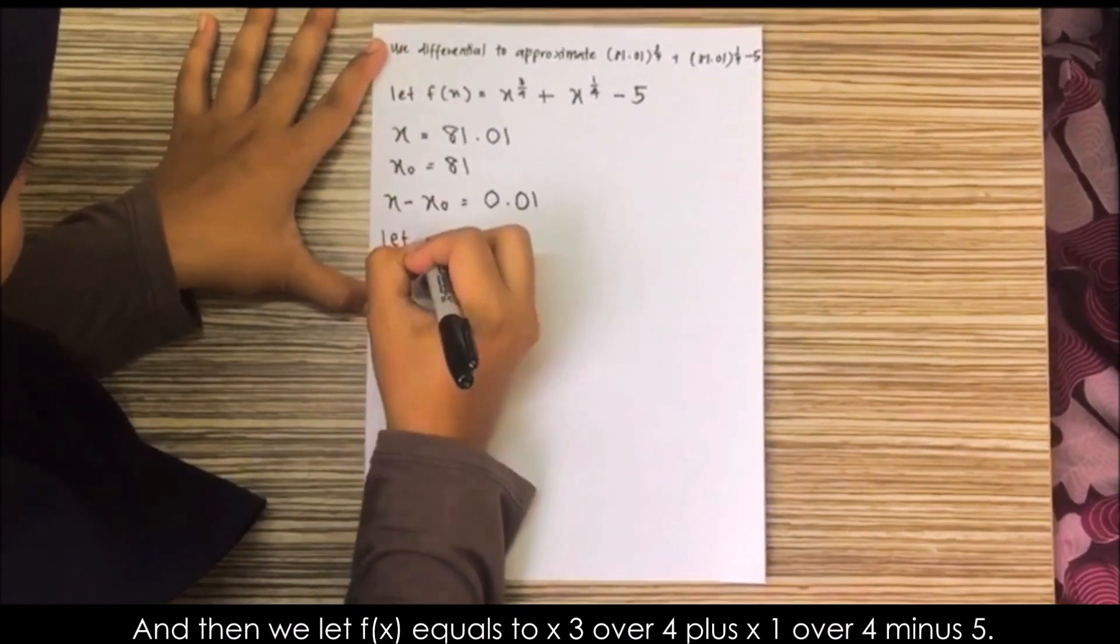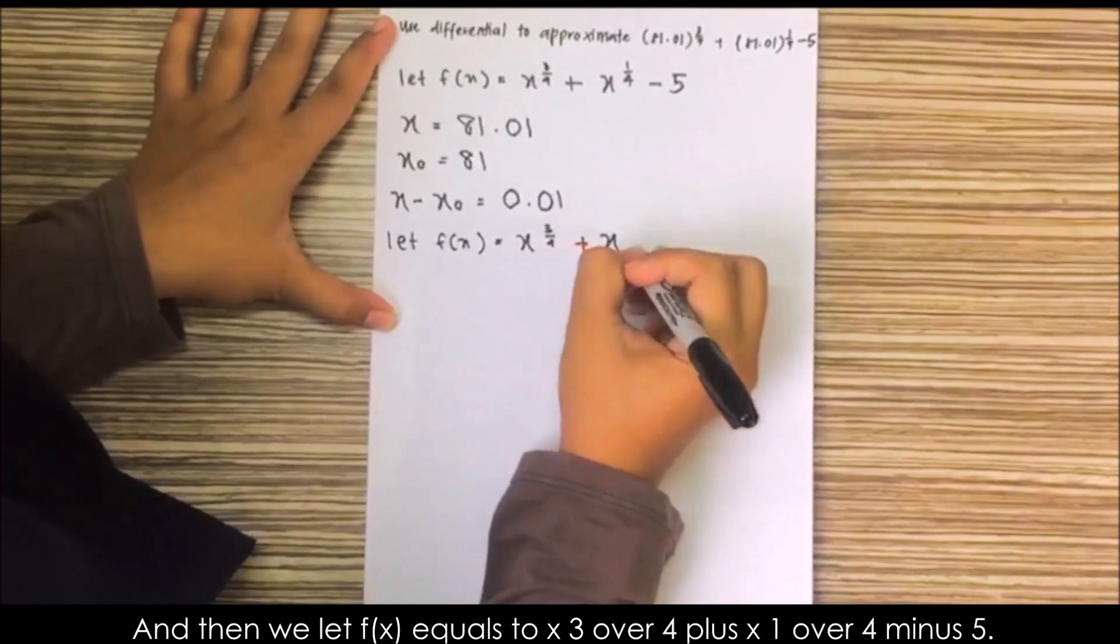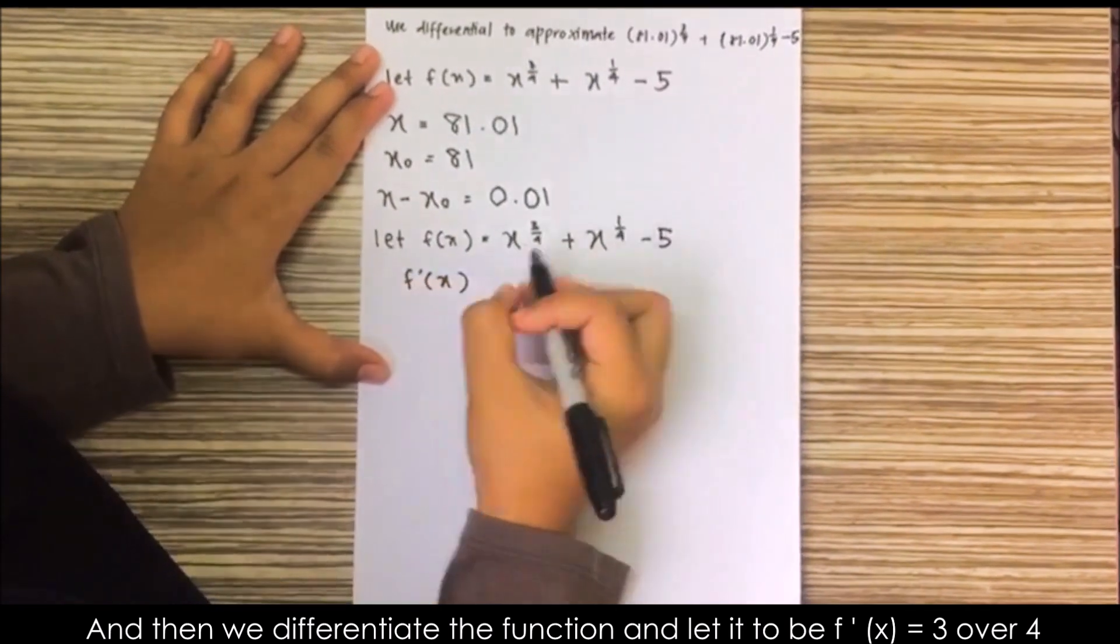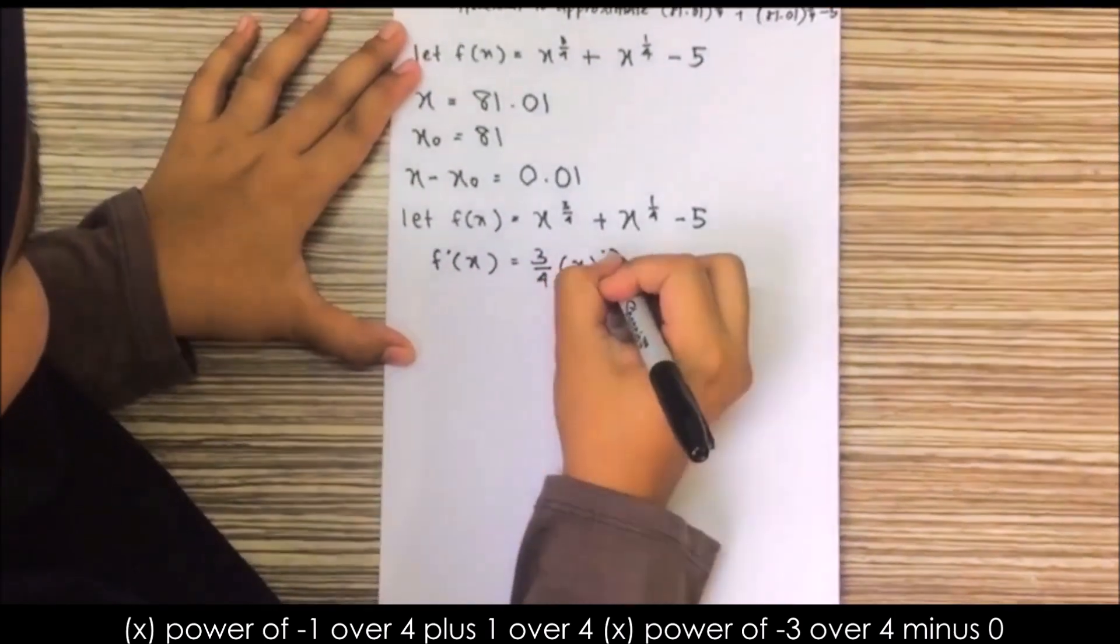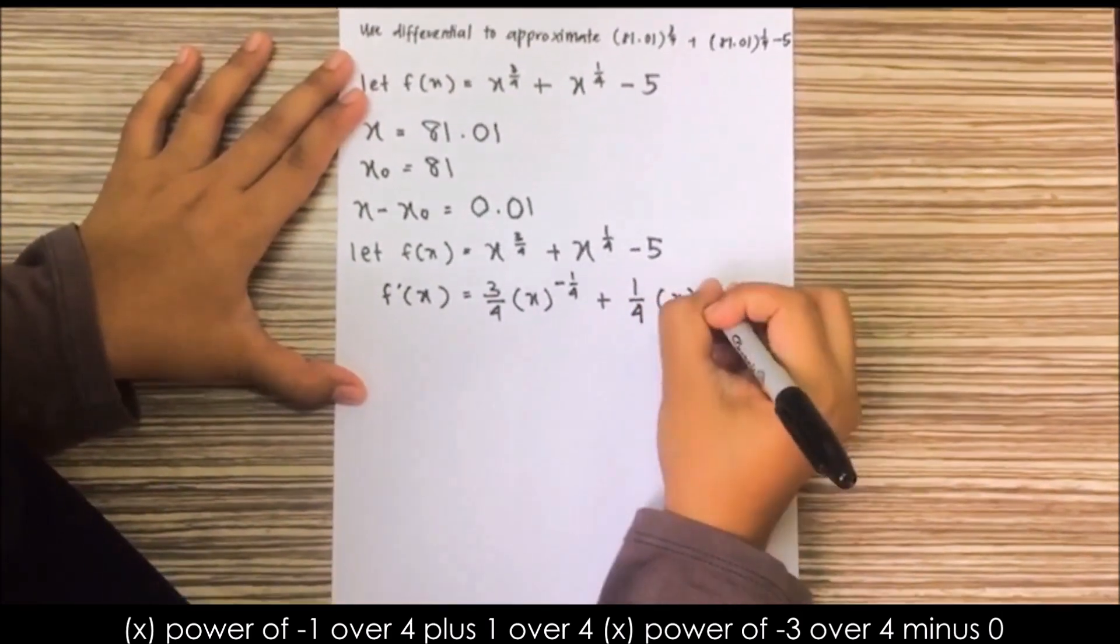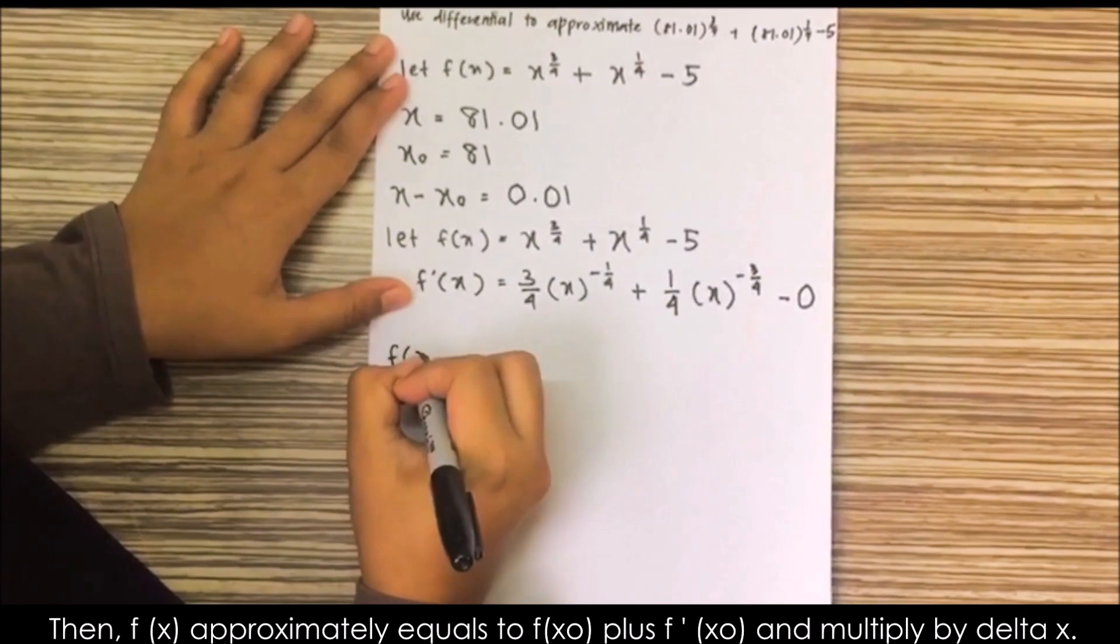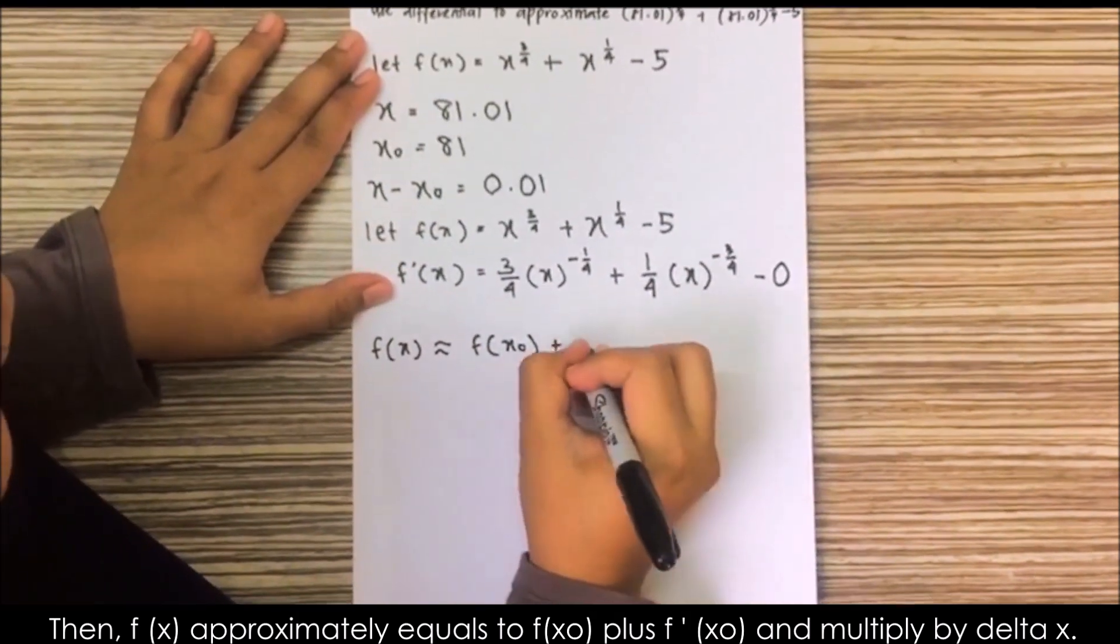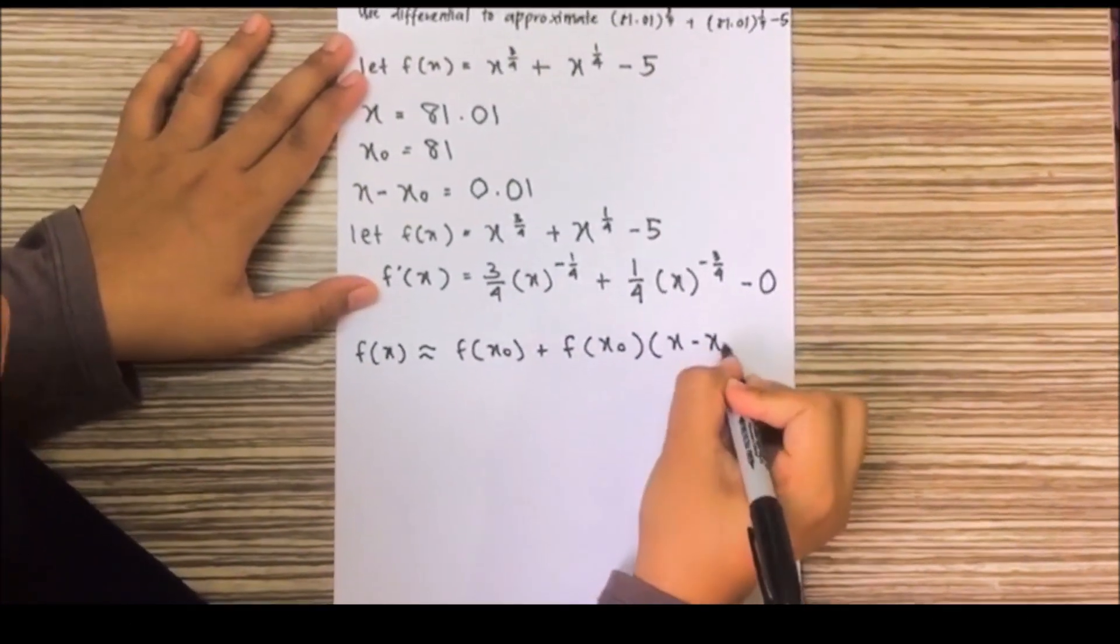And then, we let f(x) equals x to the 3 over 4 plus x to the 1 over 4 minus 5. And then, we differentiate the function and let it be f'(x) equals 3 over 4 times x to the power of negative 1 over 4 plus 1 over 4 times x to the power of negative 3 over 4 minus 0. And then, f(x) approximately equals f(x initial) plus f'(x initial) and multiply by delta x.